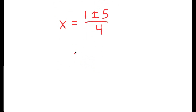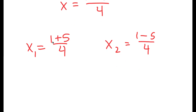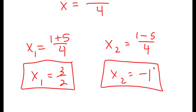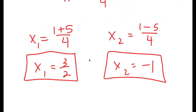I get two solutions: x equals 1 plus 5 over 4, and x equals 1 minus 5 over 4. So 1 plus 5 is 6, and 6 over 4 simplifies to 3 over 2. And 1 minus 5 is negative 4, and negative 4 over 4 is negative 1. So my two solutions are x equals 3 over 2 and x equals negative 1. You can plug these in to verify. Thank you for watching — if you liked the video, please leave a like, subscribe, and share.